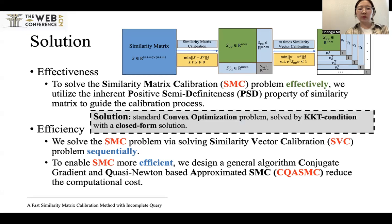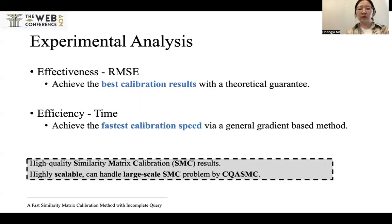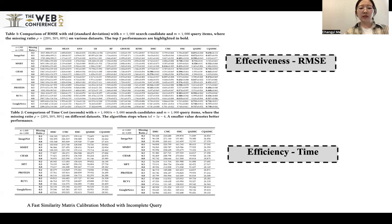We formulate the target problem as a standard convex optimization problem and solve it by KKT conditions with a closed-form solution. Theoretical analysis ensures stable completion performance and convergence speed. Extensive experiments on real-world datasets demonstrate that our proposed method outperforms baseline methods in terms of both completion accuracy and speed. Both theoretical and experimental analyses demonstrate our proposed method is stable, effective, and sound.